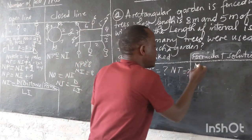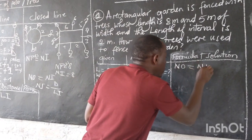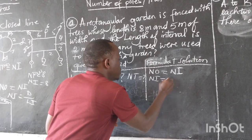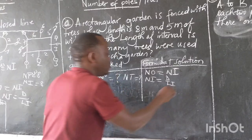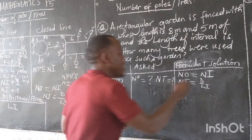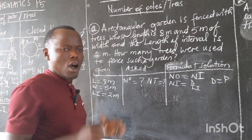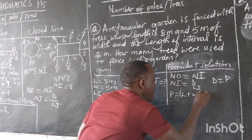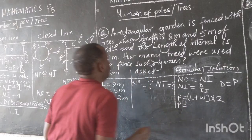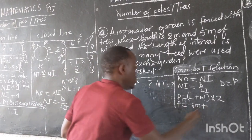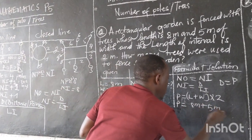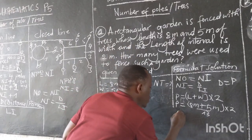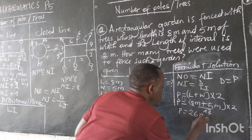Since it is a closed line, we have said that number of objects equals number of intervals. And number of intervals equals distance over length of interval. They don't give us the distance directly, but distance equals the perimeter. On a rectangle, perimeter equals (length + width) times two. Therefore, perimeter equals (8 + 5) times 2. Eight plus five equals 13, and 13 times two equals 26. Therefore, the perimeter equals 26 meters, which is the distance.